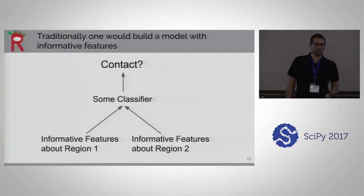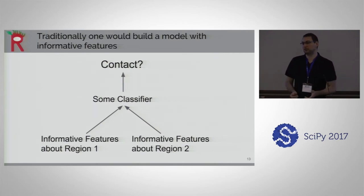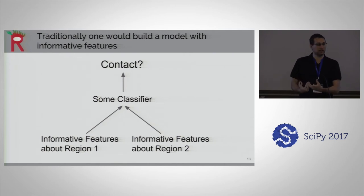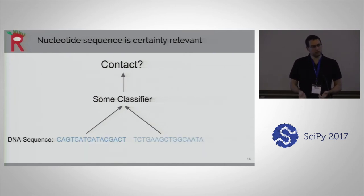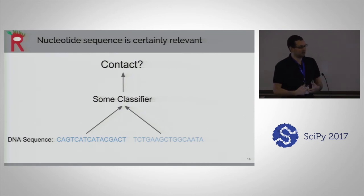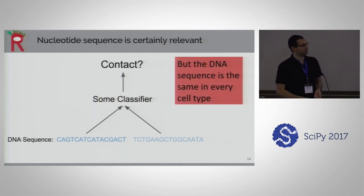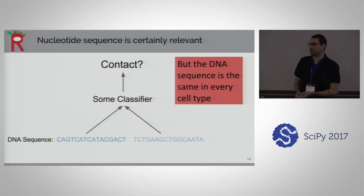To build our classifier, traditionally we'd take informative features about region 1 and region 2 and build an estimator. The problem is we don't have good informative features yet. We know some motifs like CTCF seem to indicate a connection, but beyond a few motifs we don't know much. We do know that DNA sequence is roughly important — it encodes motifs like CTCF, GC bias, and other things. However, DNA sequence is the same in every cell type, and we know structure differs between cell types, so we can't only use DNA sequence.